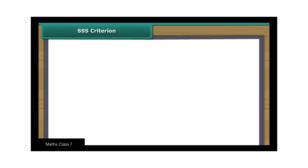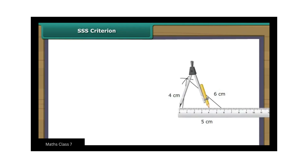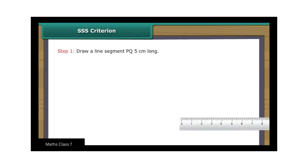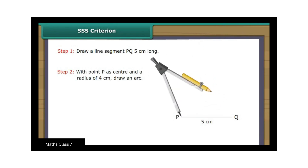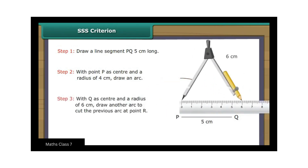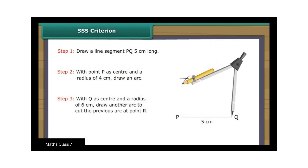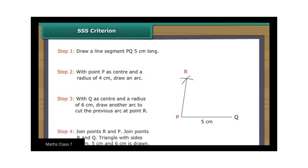SSS Criterion. Let us draw a triangle whose three sides measure 4 cm, 5 cm and 6 cm with the help of a ruler and a compass. Draw a line segment PQ 5 cm long. With point P as center and a radius of 4 cm, draw an arc. With point Q as center and a radius of 6 cm, draw an arc to cut the previous arc at point R. Join points R and P, then join points R and Q. Triangle with sides 4 cm, 5 cm and 6 cm is drawn.